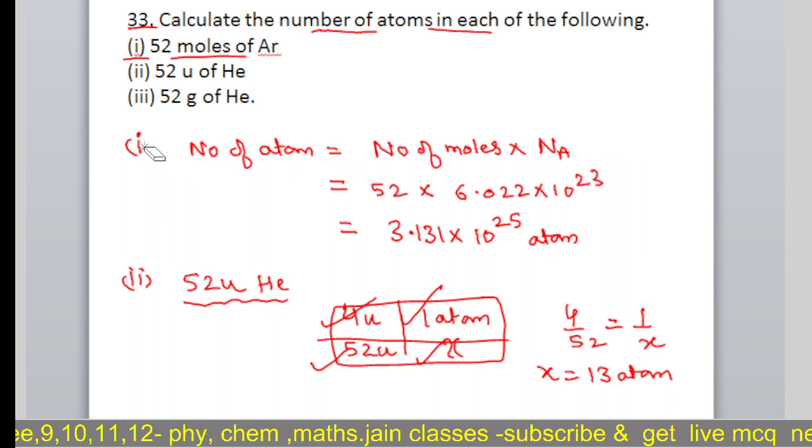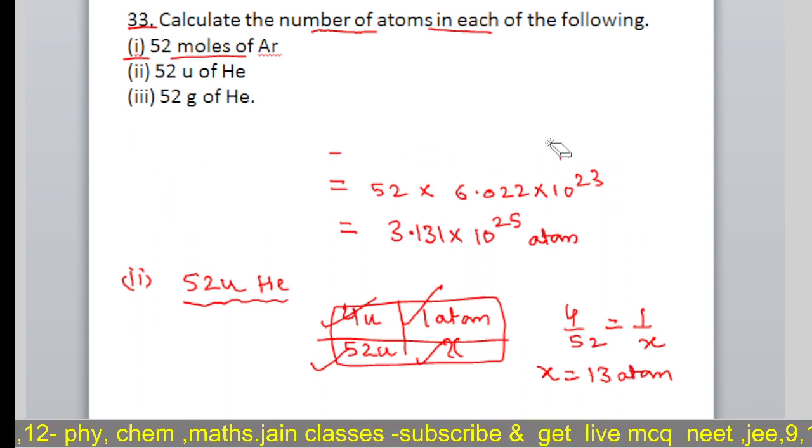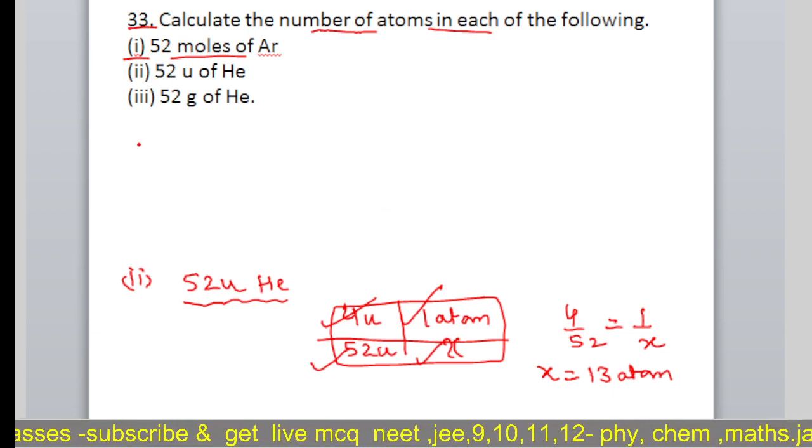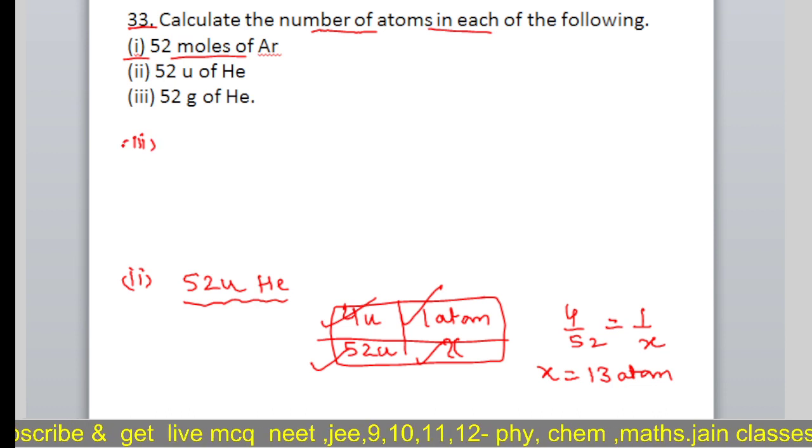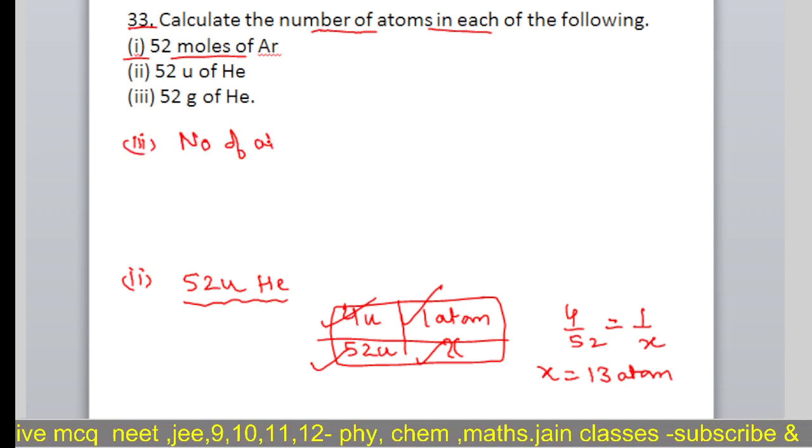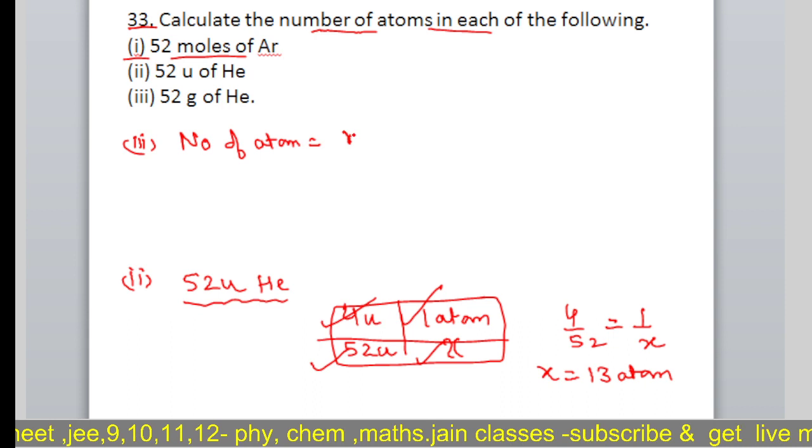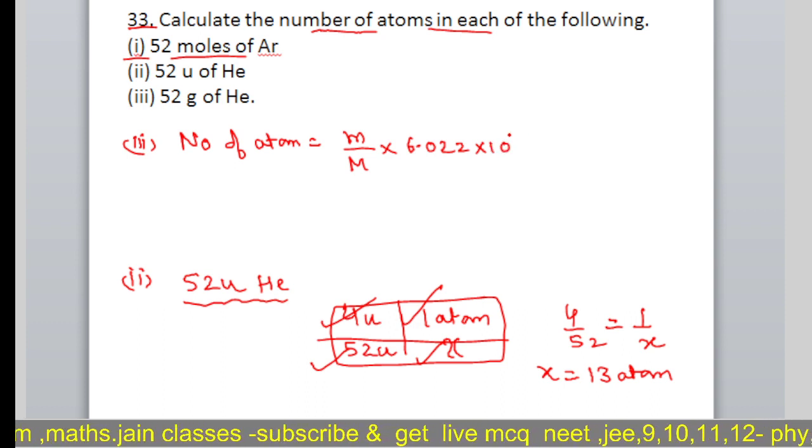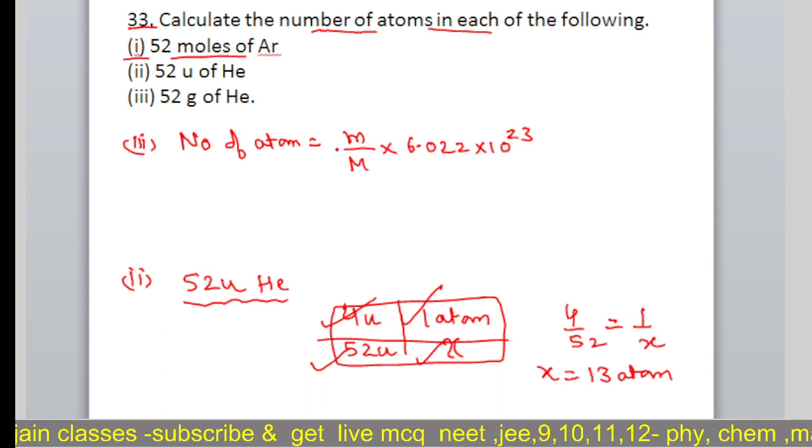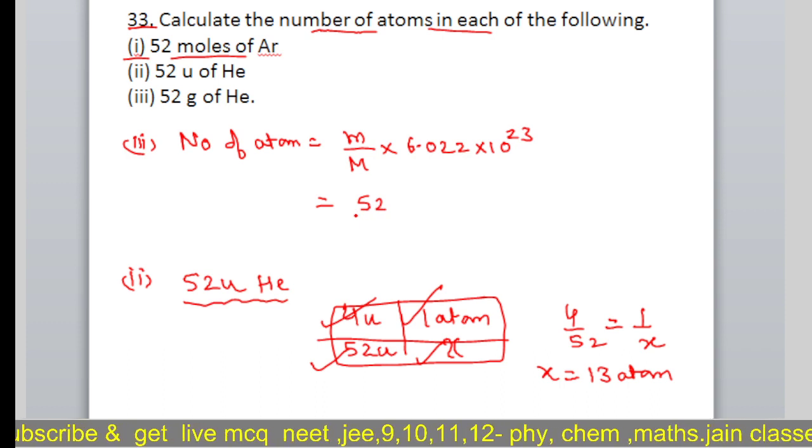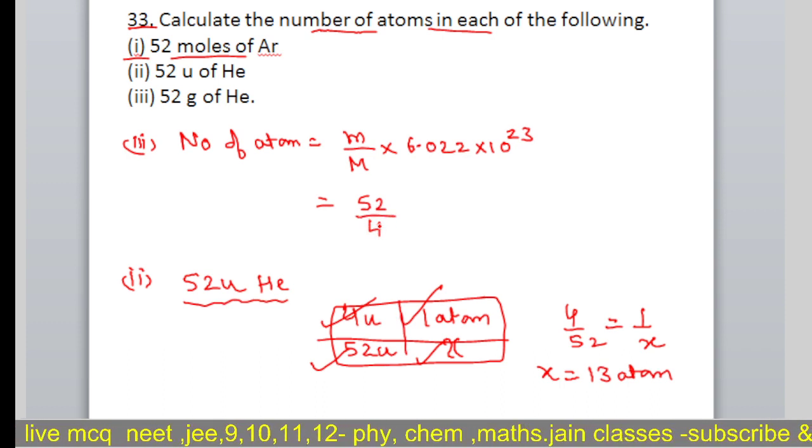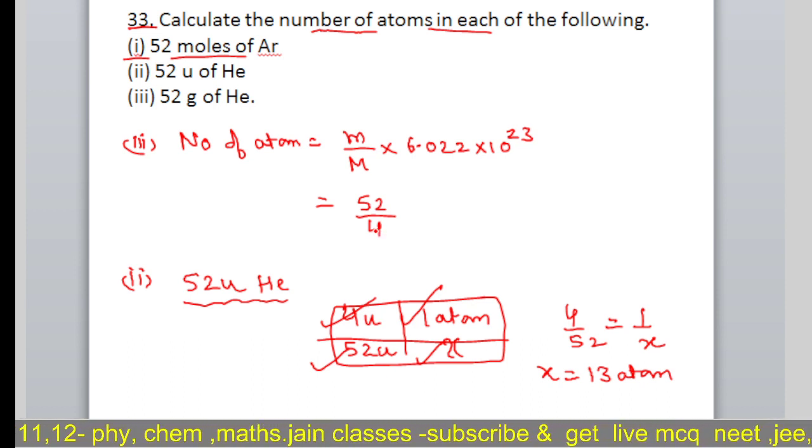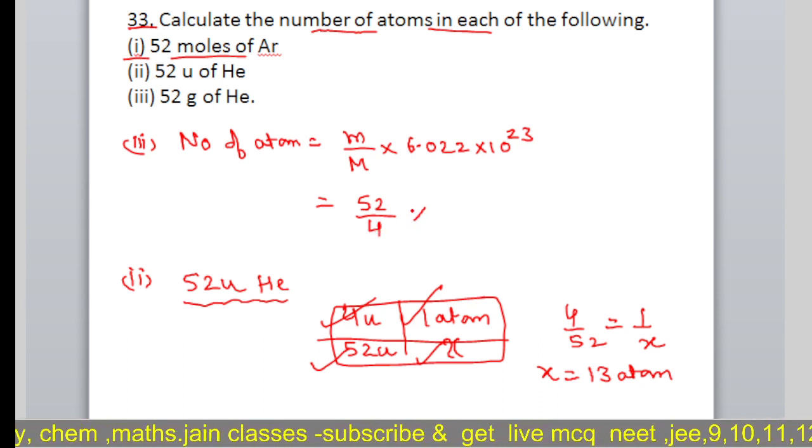Now the third part - 52 grams helium, how many atoms will there be? For the third part, we'll apply the formula: number of atoms equals given mass divided by molar mass into Avogadro's number. Given mass is 52 grams and molar mass is 4 grams, into Avogadro's number.